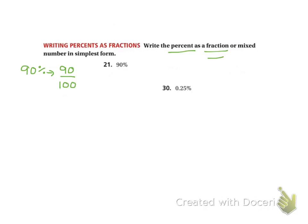From there it says simplest form, write it in simplest form, so we need to reduce this. Both of these numbers are divisible by 10. Remember I said you could use your calculator if it reduces fractions for you, I was okay with that. 90 divided by 10 is 9, and 100 divided by 10 is 10.